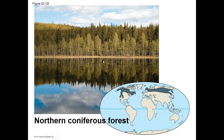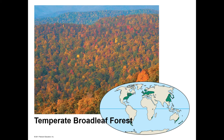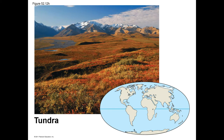A coniferous forest has lots of conifers, is typically pretty far north, and usually gets quite a bit of rainfall. A broadleaf forest has deciduous trees that lose their leaves — it gets a lot of rain compared to grassland but is warmer than a coniferous forest, so typically less snow. Tundra is very cold, found near the arctic.